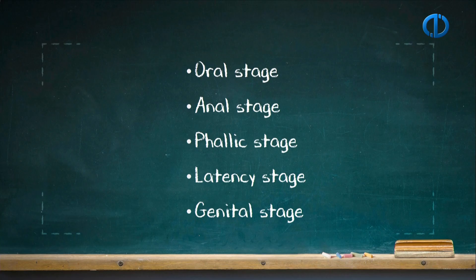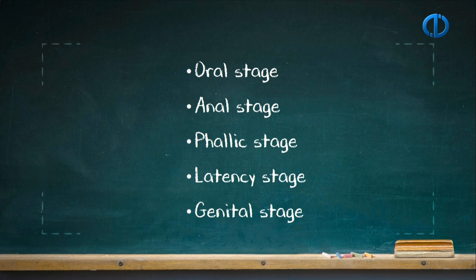Psychoanalytic theory proposes that personality develops in accordance with sexual development. That's why the theory is labeled as psychosexual development. Psychosexual development begins at infancy, follows through five stages, and lasts into adulthood. The stages are consecutive, meaning that every child goes through these stages in the same order.